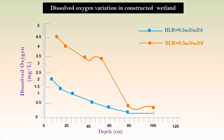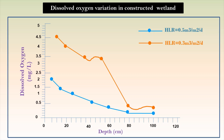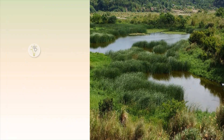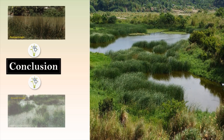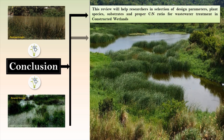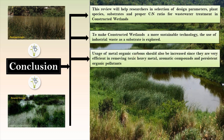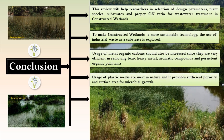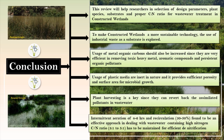A low hydraulic loading rate causes a very significant decrease in dissolved oxygen. To make constructed wetlands a more sustainable technology, one should consider the use of industrial waste as a substrate. Plastic media has been found to have anti-clogging properties with a high specific surface area.